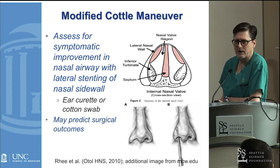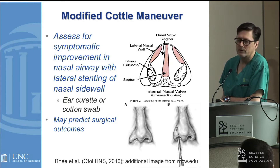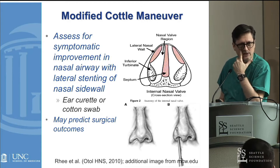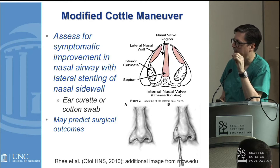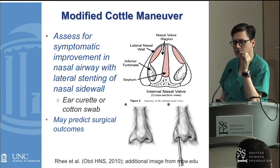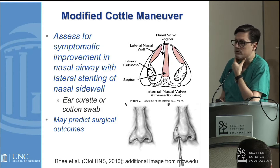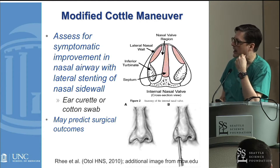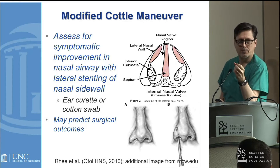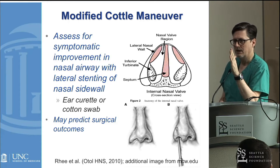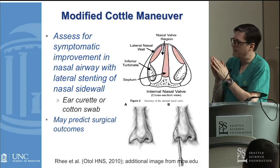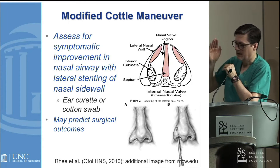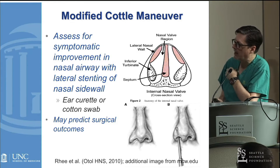When assessing patients for valve reconstruction, I've really come to rely on the modified Cottle maneuver. It's very simple. As opposed to a Cottle, where you're putting your finger on the outside of the nose and dragging the face over, I just put a little ear curette into the nasal cavity and apply gentle pressure up on the upper lateral cartilage. If patients note significant benefit with that, I'm willing to consider doing something for them. I've found that after septoplasty, you can unmask a valve collapse that wasn't initially appreciated — almost like the crooked septum was stenting the valve.